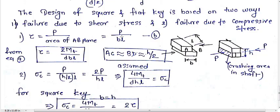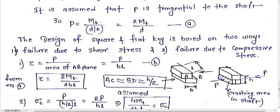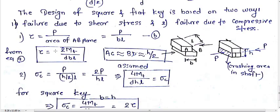This plane will shear out. AB plane has width B and shear takes place along the length L. So tau equals P by BL. Putting load equals 2Mt by d, we get tau equals 2Mt by DBL.